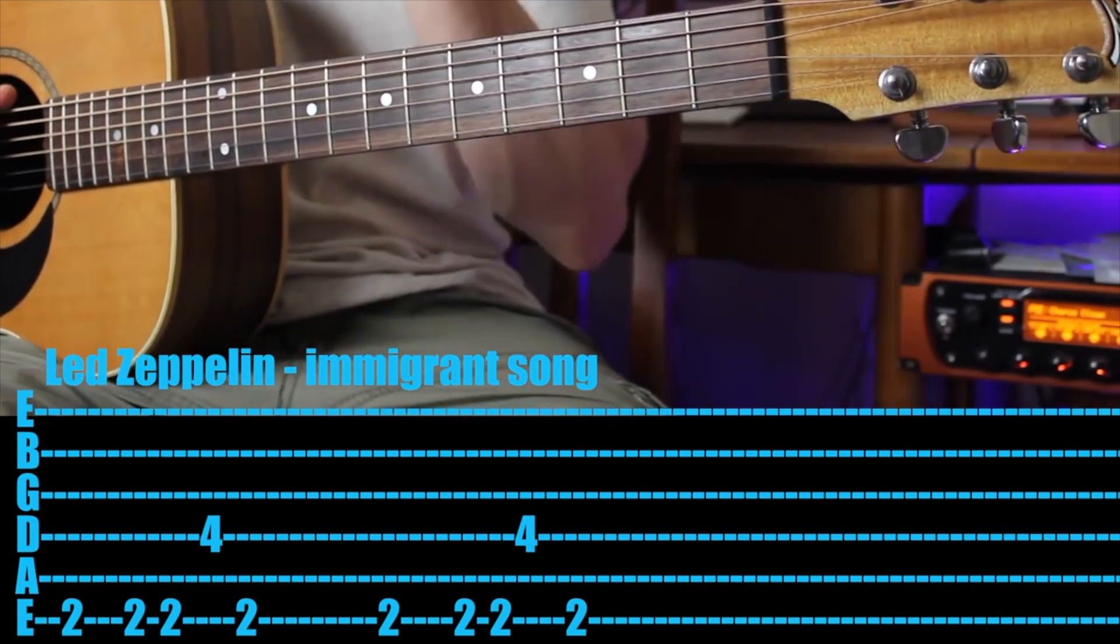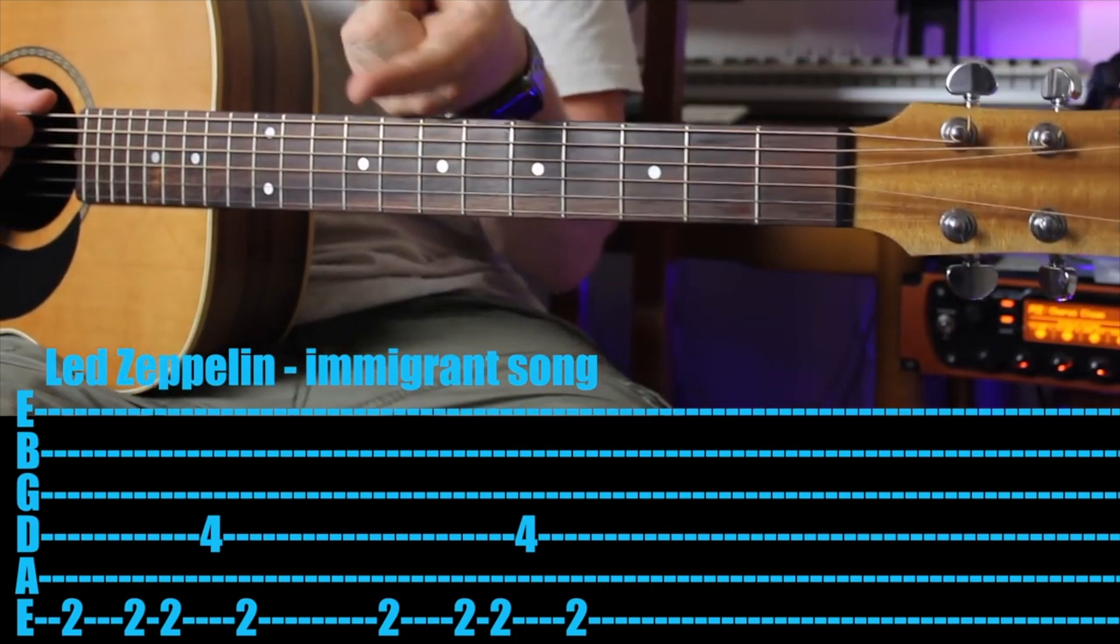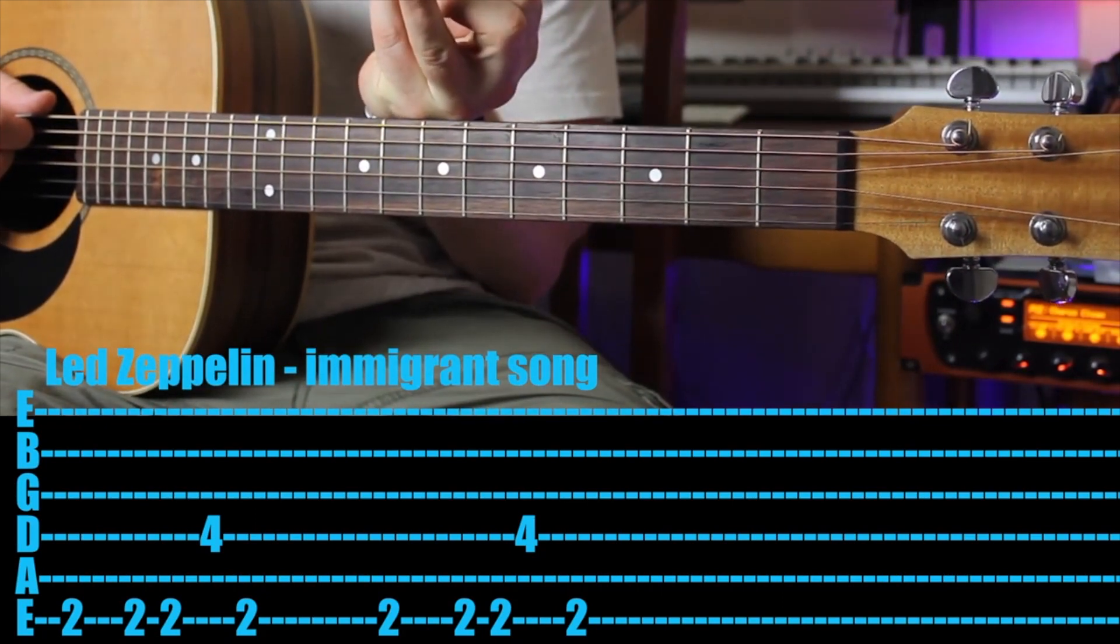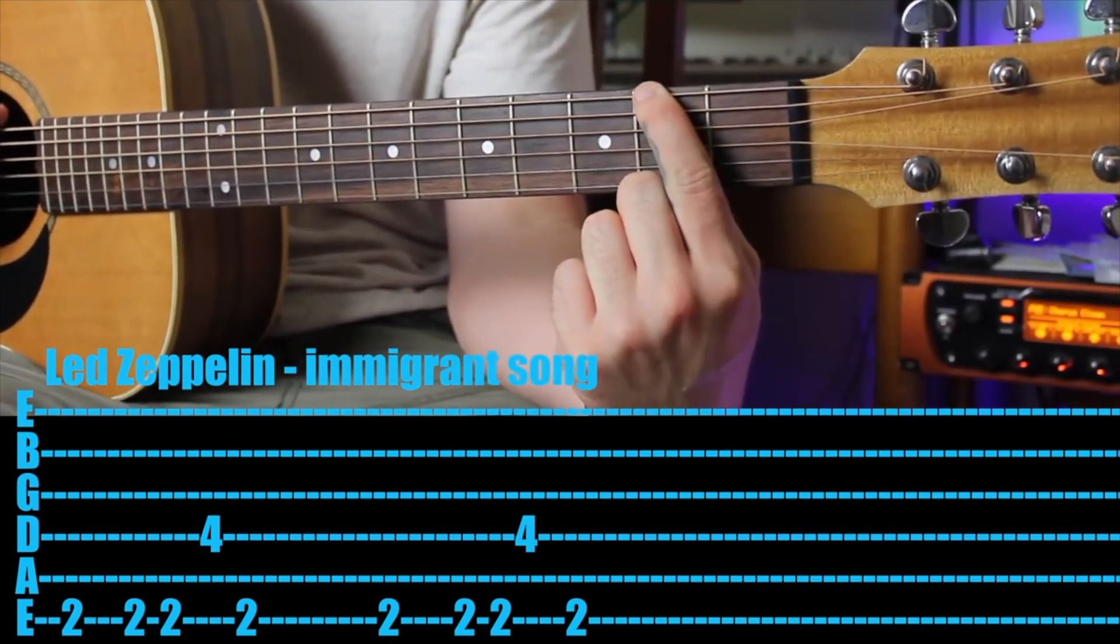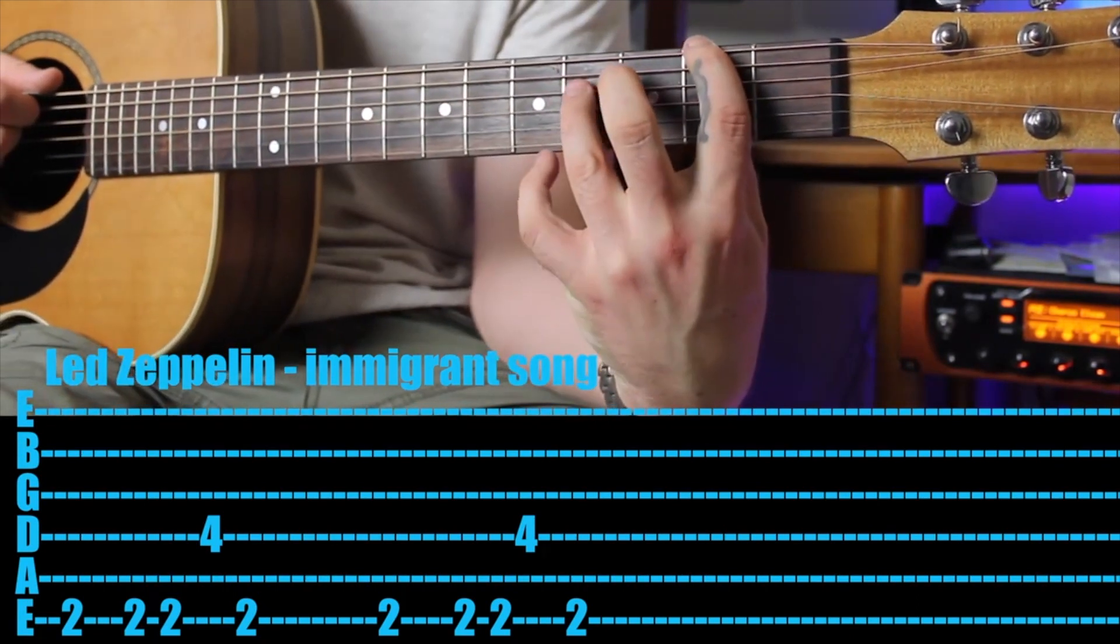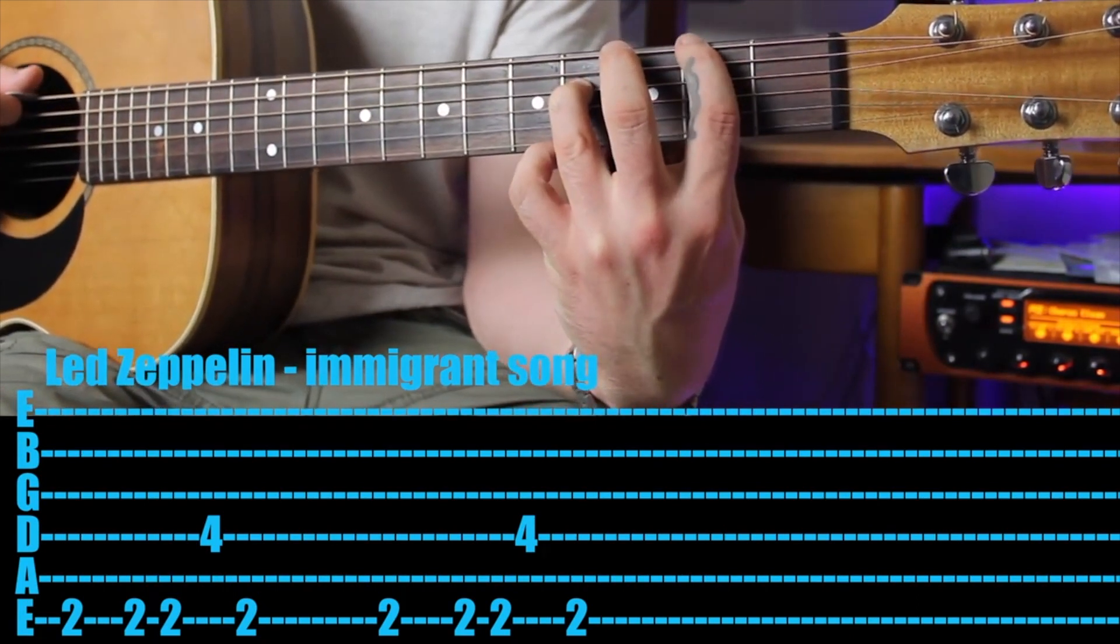Very quick, isn't it? Now you can actually play this with two fingers with your first finger and your third finger. So I'm going to show you how to do that. So you want your first finger resting on the second fret of the sixth string and your third finger resting on the fourth fret of the fourth string.